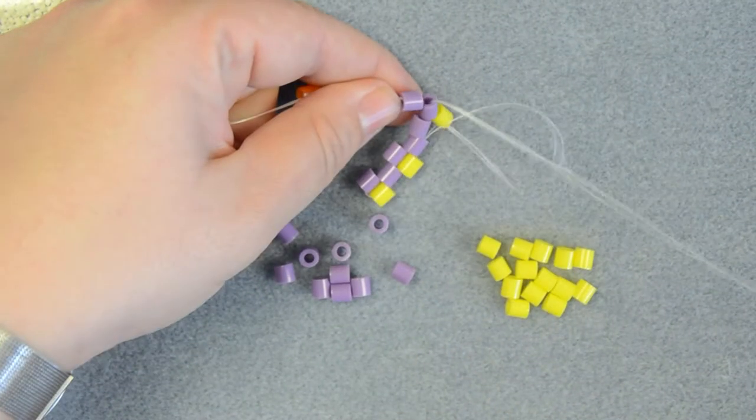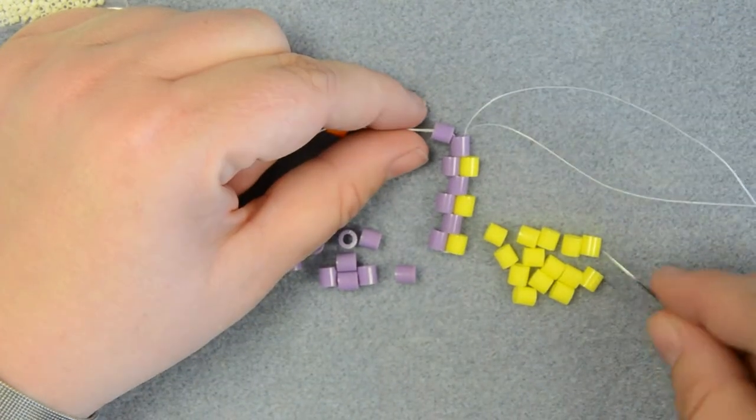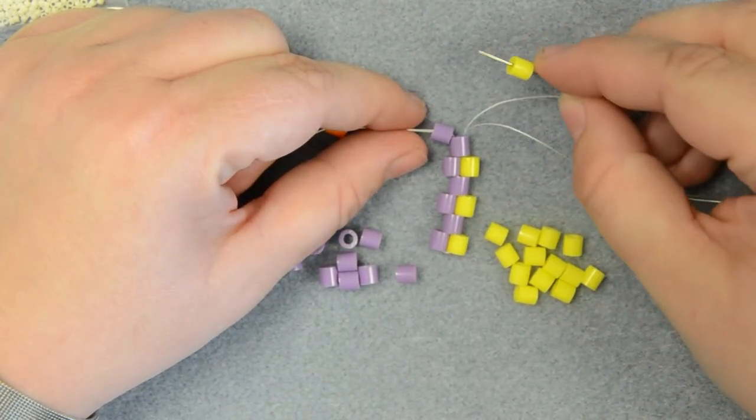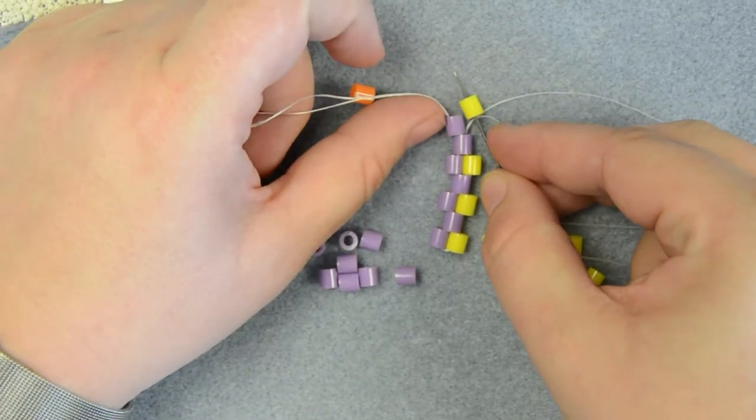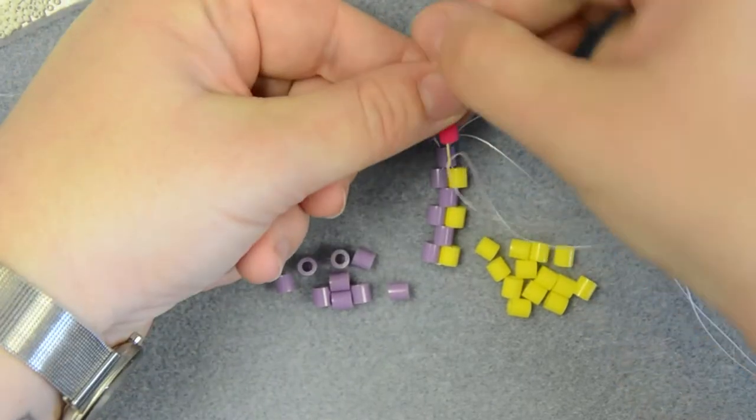Now when you get to this second end, this is where you have to have a slightly alternative thread path. So what we're going to do is we're going to pick up the bead for the end of the row, so to make it a bit easier for you to see I'll pick up a pink one.